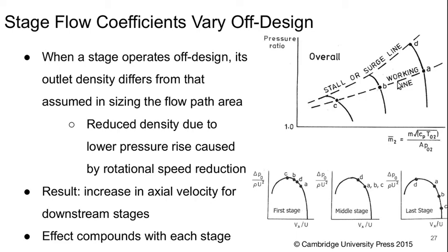Here is a compressor characteristic notionally. Here's the stall or surge line, here's the working line, and we have three points A, B, and C, plus a point D which is on the constant-speed line near the stall point. We also have a non-dimensional pressure-rise characteristic versus flow coefficient for each stage—these characteristics are roughly independent of rotational speed, especially for a lower-speed machine. At point A, we're essentially at the same operating point for all three stages—that's basically the design point.